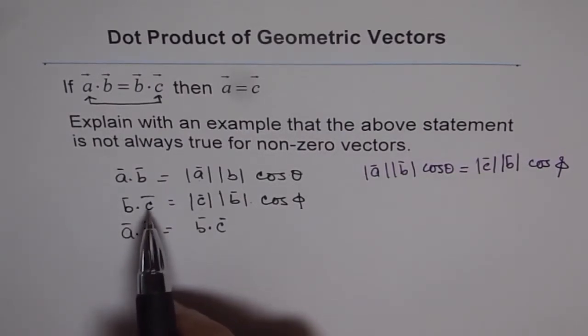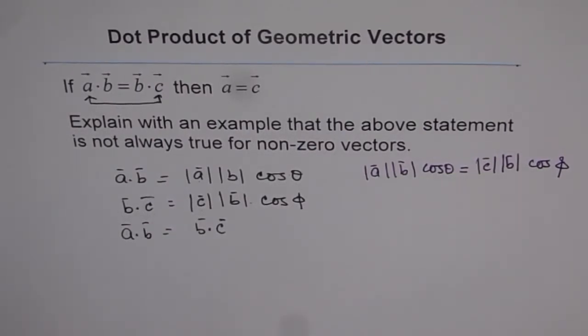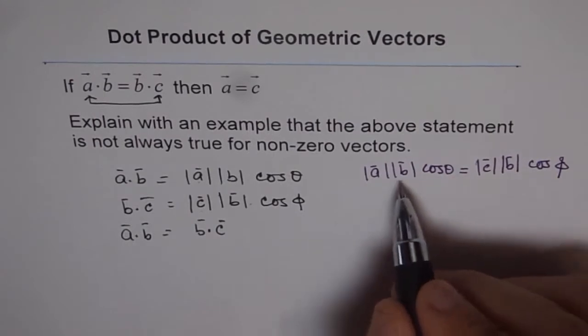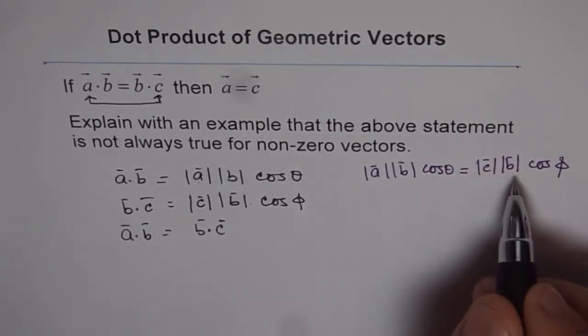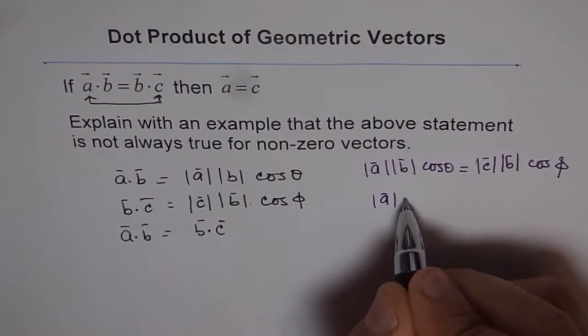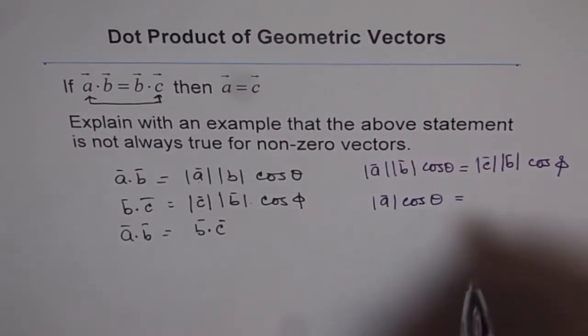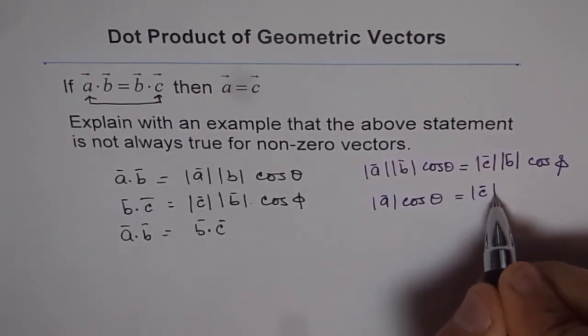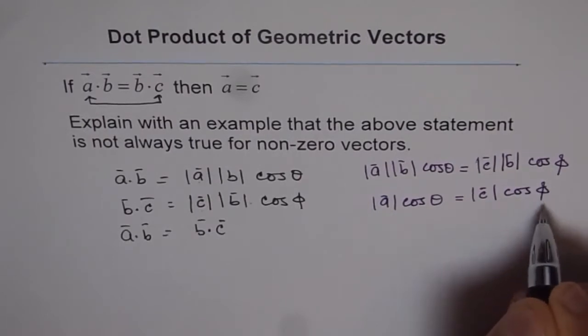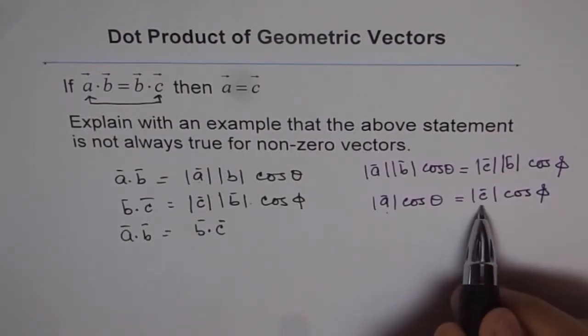Because vector C could have a different angle with vector B. So if you compare these two and all are scalar quantities, you get magnitude of A cos theta is actually equals to magnitude of C cos phi. We don't get A equals C. Do you see that?